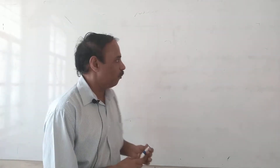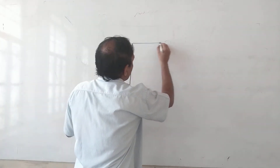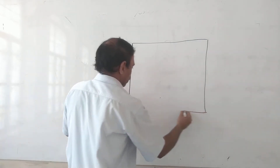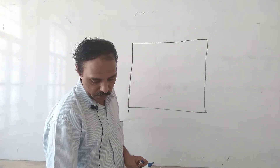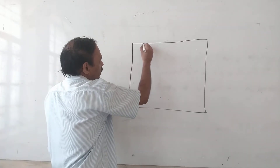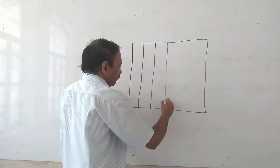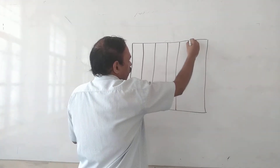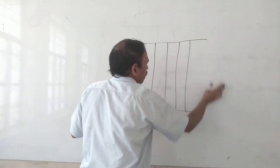Find the proper nouns and write them with their common nouns. There are 6 rows and 5 columns in the puzzle.